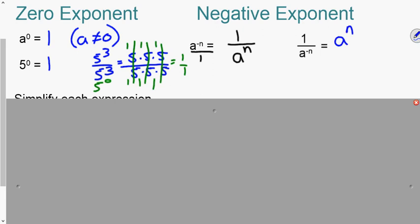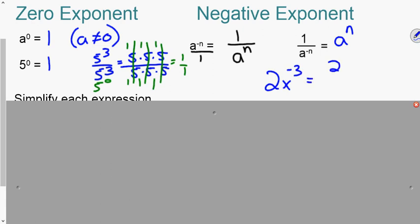Please do not confuse this with a reciprocal. For example, if this was like 2x to the negative three, the two stays because this has a positive exponent of one. So that stays, only the negative exponent flips. So we would flip that to the denominator.